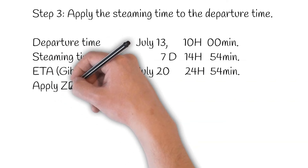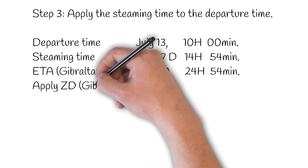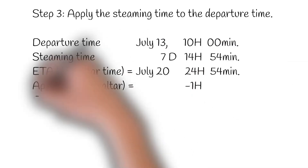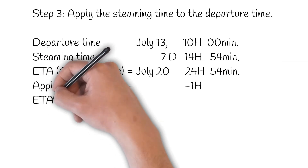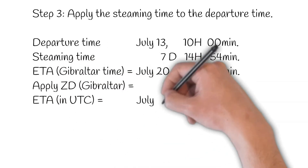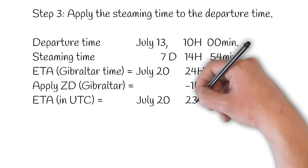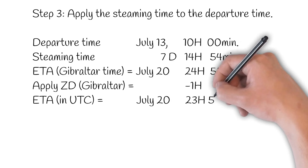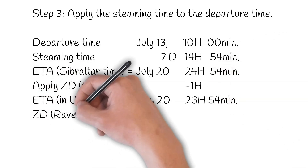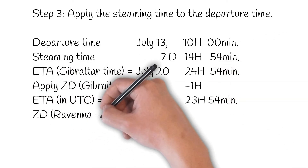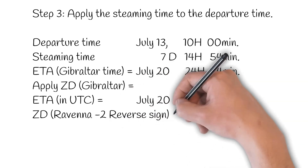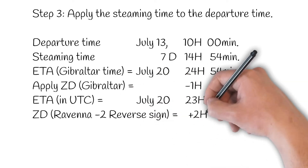Apply the zone description of Gibraltar using the Admiralty List of Radio Signals Volume 2 — that is minus 1 hour. You will obtain the ETA in UTC, which is July 20th at 23 hours and 54 minutes. Apply the zone description of Ravenna, that is minus 2 hours, but reverse the sign — it will be positive, or plus 2 hours.